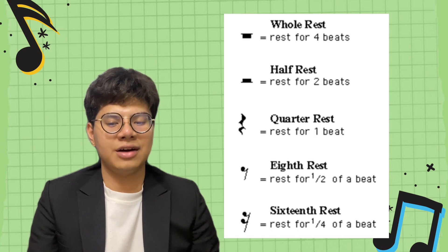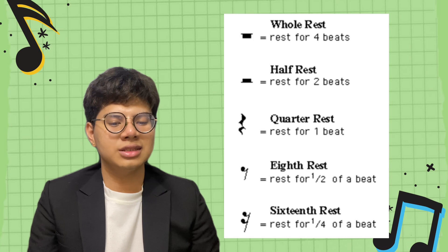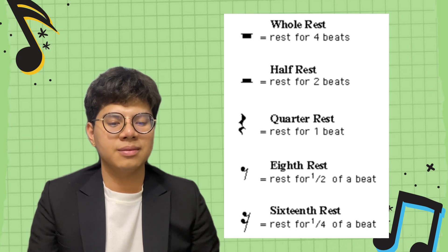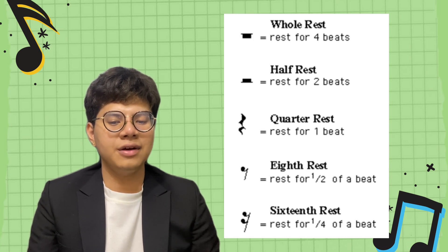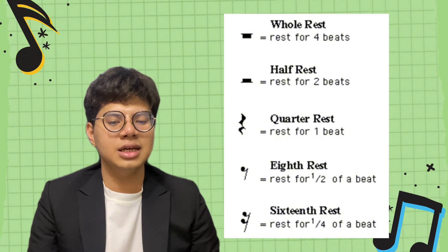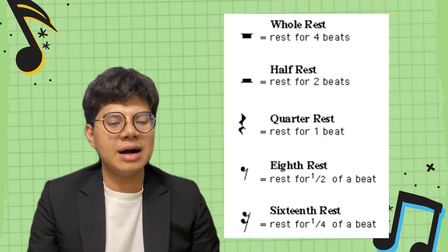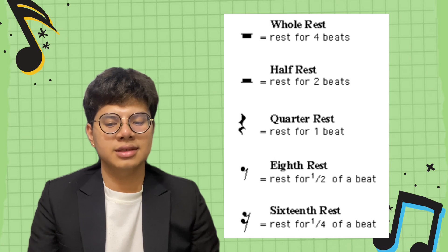Next is the half rest. It is a filled-in rectangle placed on top of a line on a staff. The length of silence of a half rest is two beats, or half the value of a whole rest.